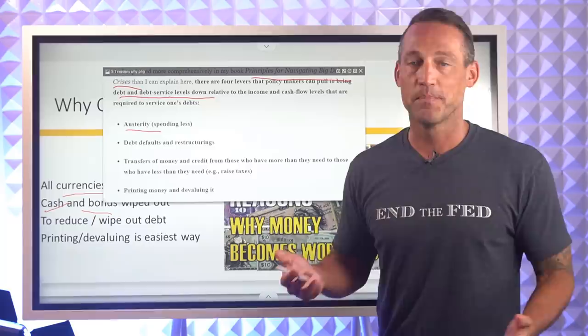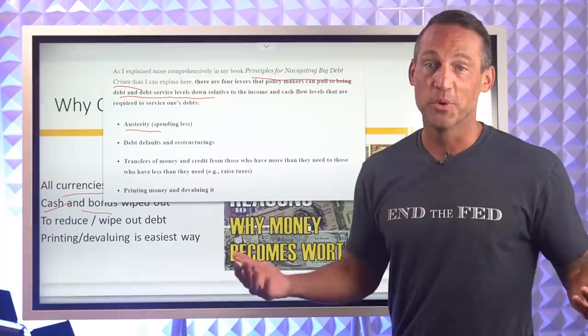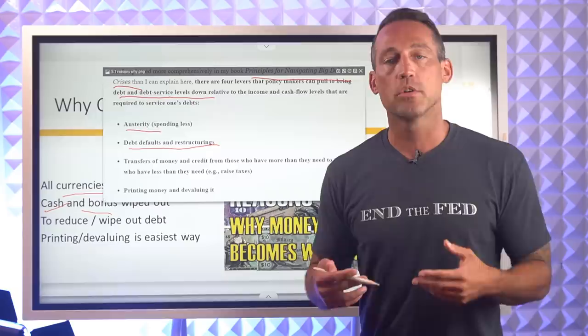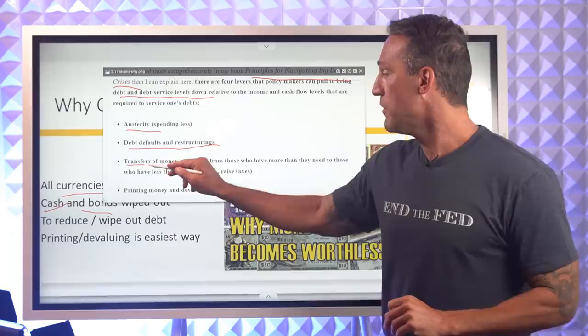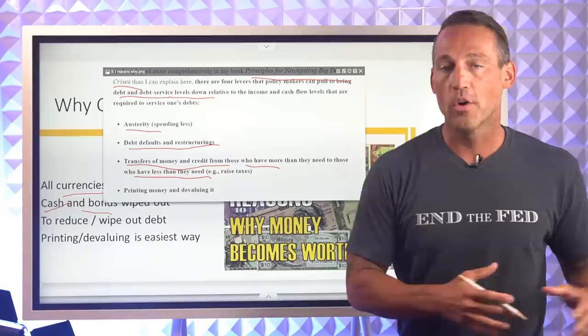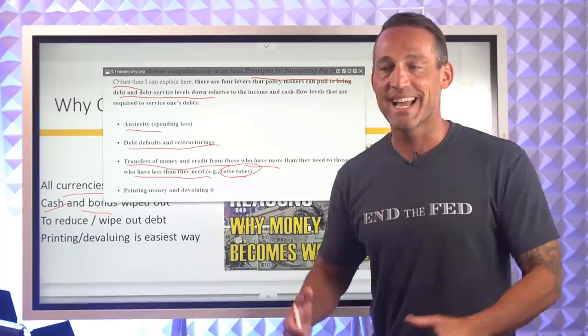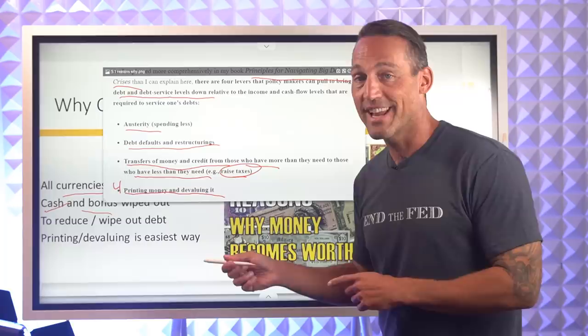If we look at Ray Dalio's book Principles for Navigating the Big Debt Crisis, he talks about four levers that policymakers have when they rack up too much debt and the debt service levels are too high. Option one is austerity — the government chooses to spend less money. Option two is debt default and restructuring — bankruptcy. Option three is to transfer money from those who have more to those who have less — raise taxes, wealth redistribution. And option four is printing money and devaluing it. It's easy to see which ones governments choose over and over again.